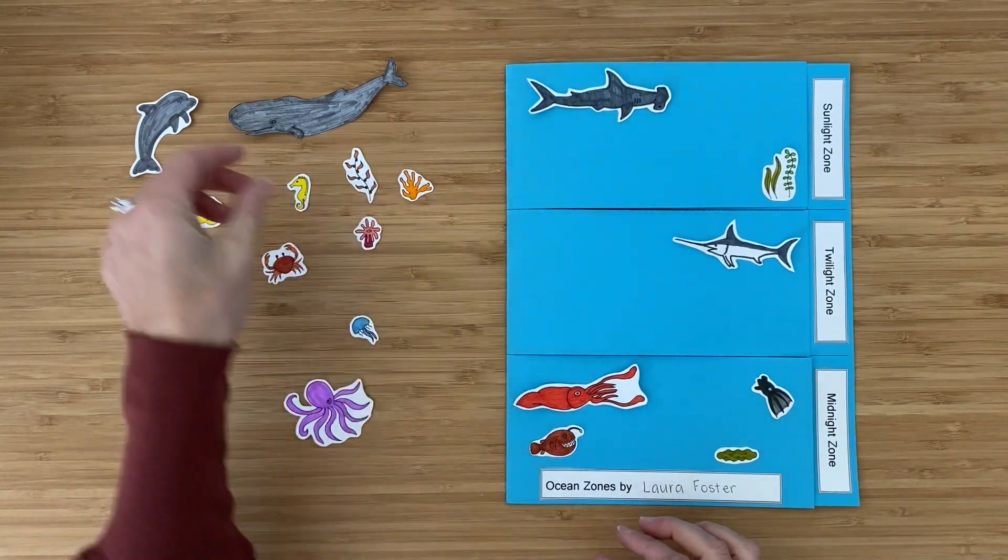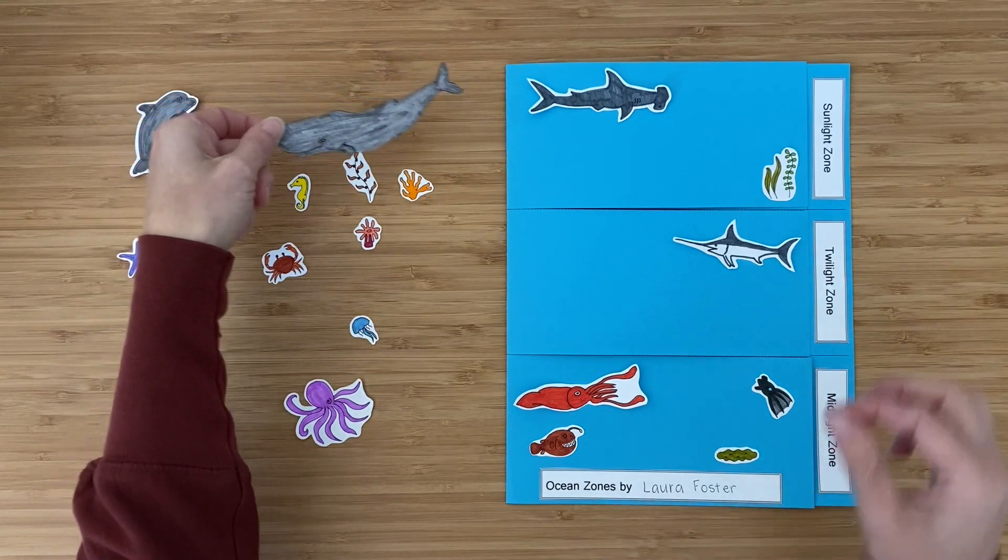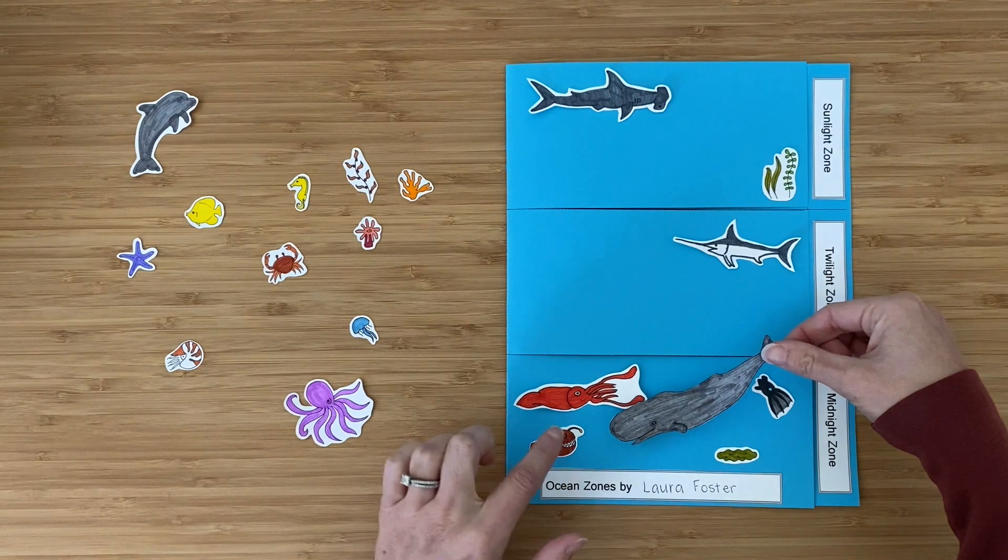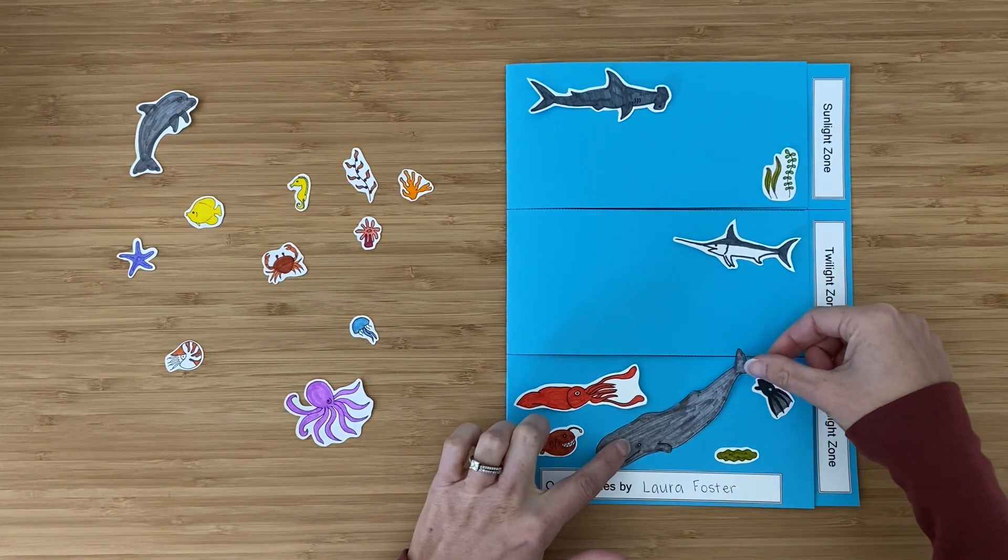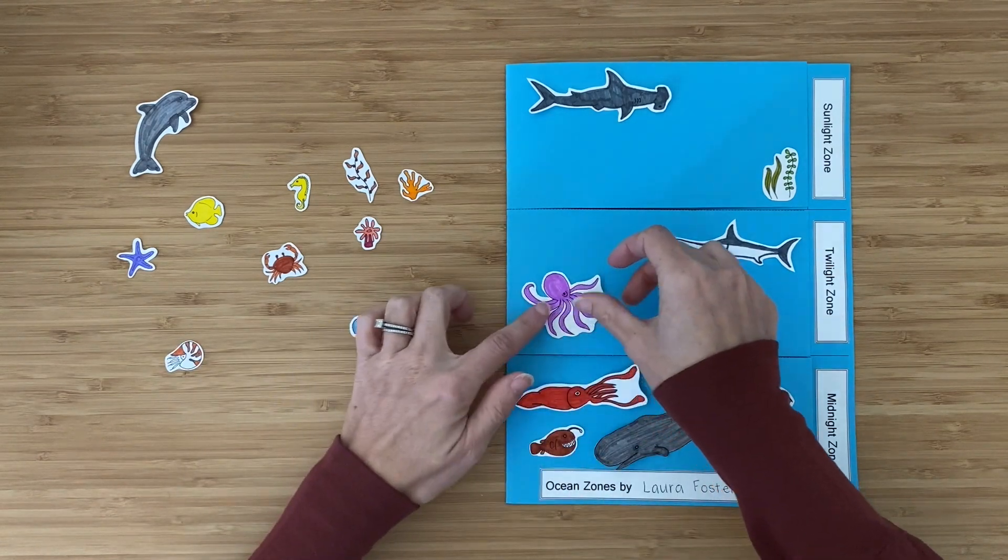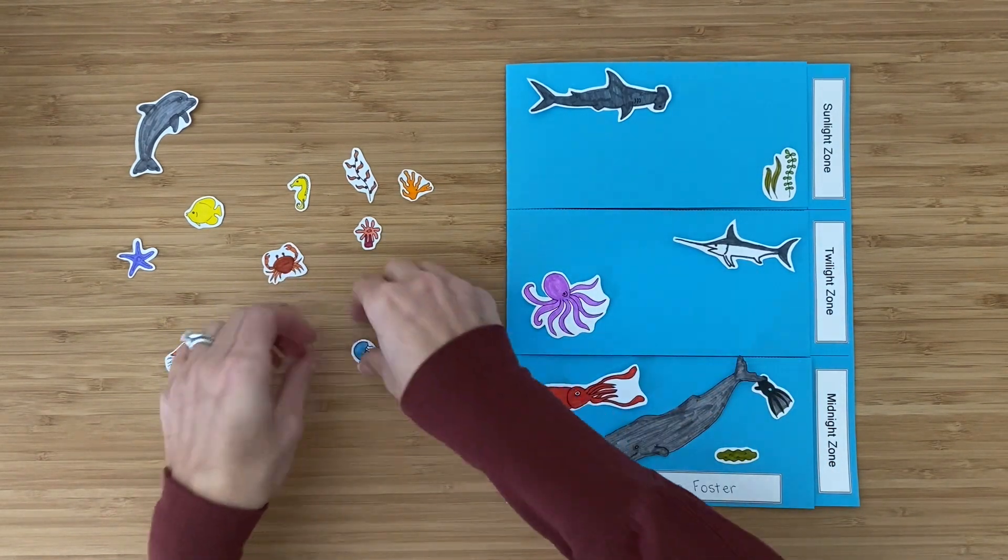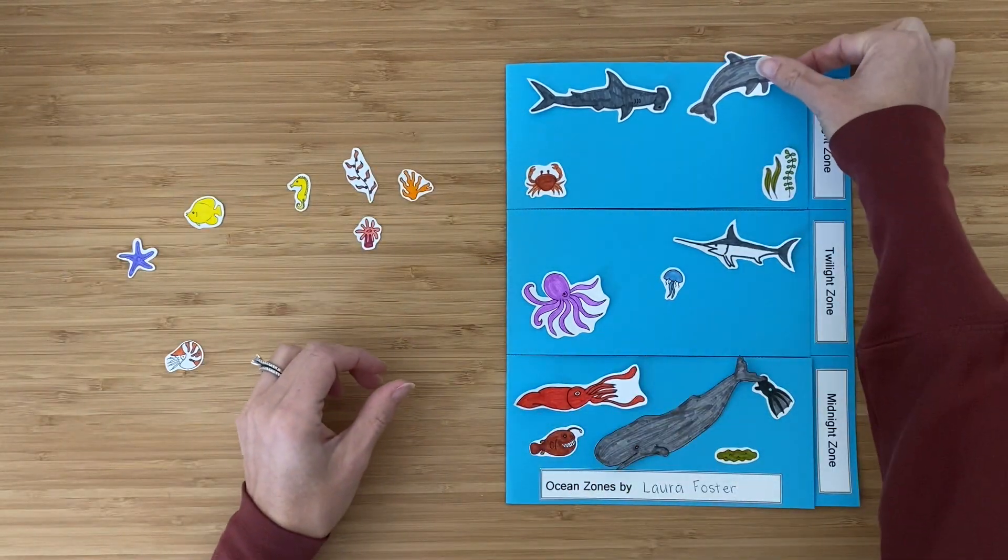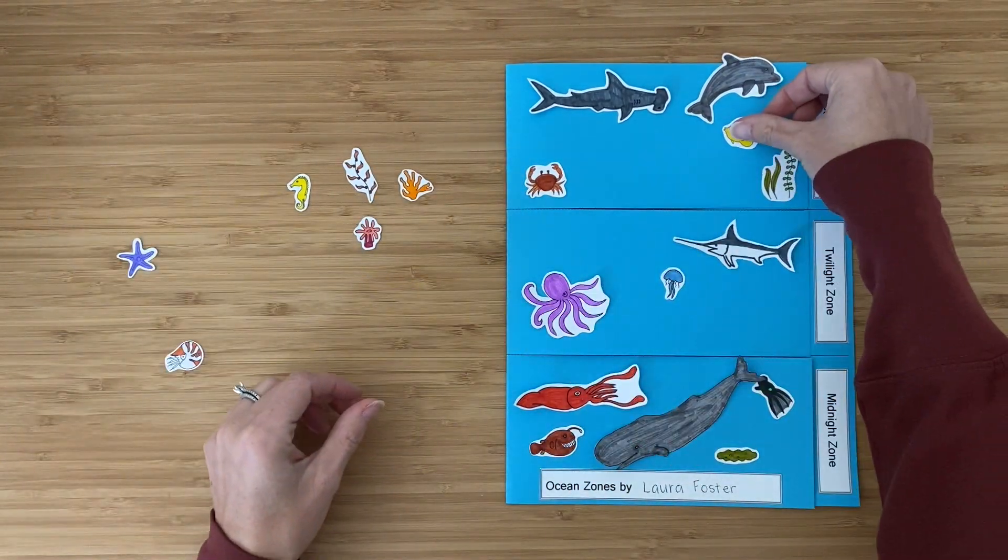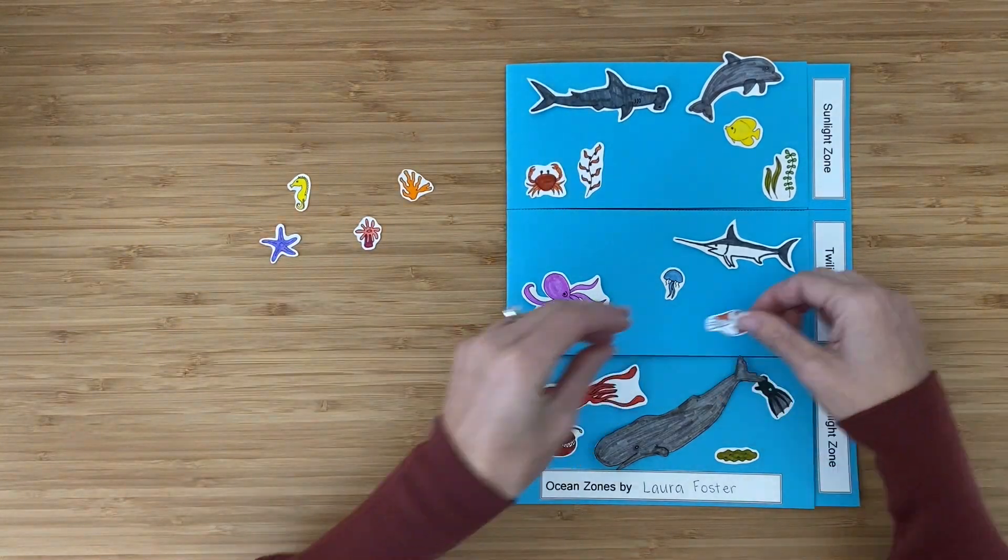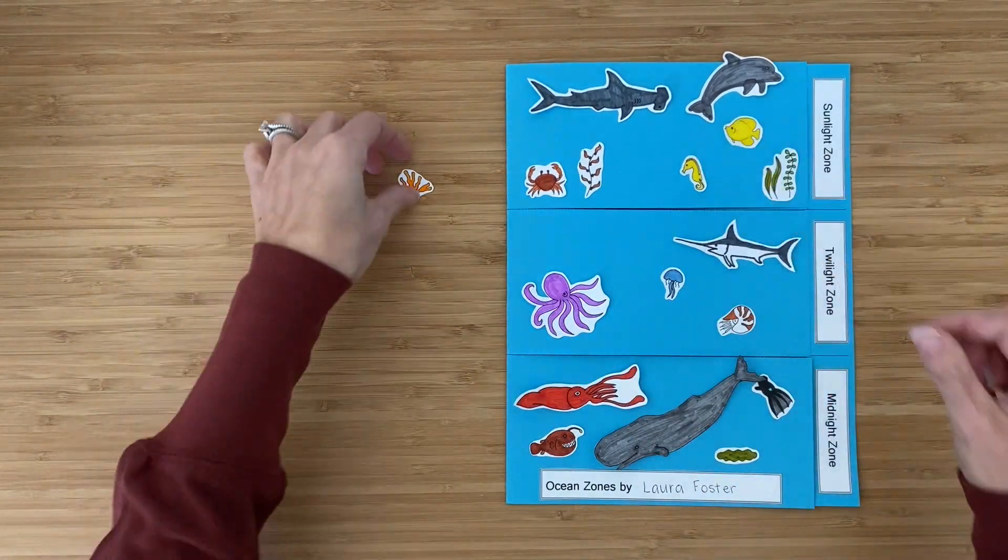For instance, the sperm whale spends a lot of time in the sunlight zone but it can dive down to find food in the midnight zone. Scientists are still learning a lot about the deep ocean because it's so difficult to study. It's so dark and the pressure is really high down there. So you might find some new research that happens after I make this video that shows you where to put something.